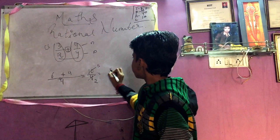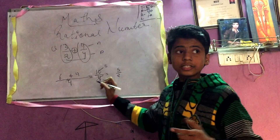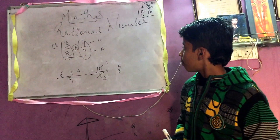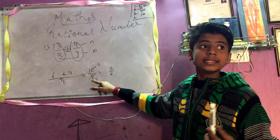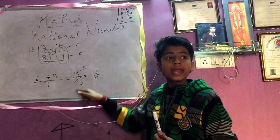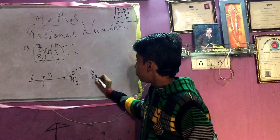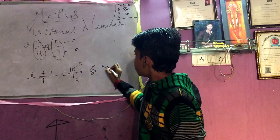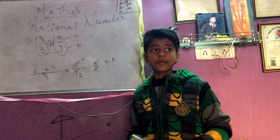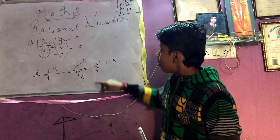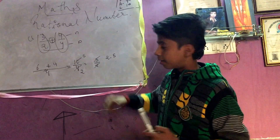The answer is five upon two. This can be further solved — the answer in decimal form is two point five. So five upon two and two point five are both correct answers.